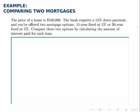Let's compare two mortgages by calculating the amount of interest that each mortgage requires. We'll start with the price of a house being $160,000. The bank requires a 15% down payment, so the loan amount will be the other 85%. The loan amount is 85% of $160,000, which is $136,000.